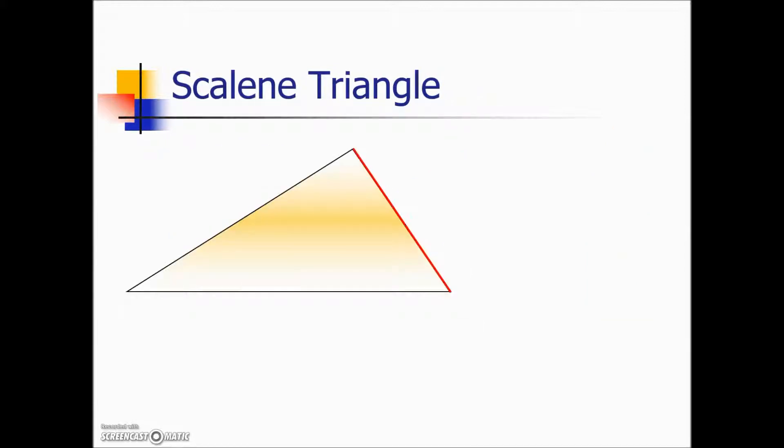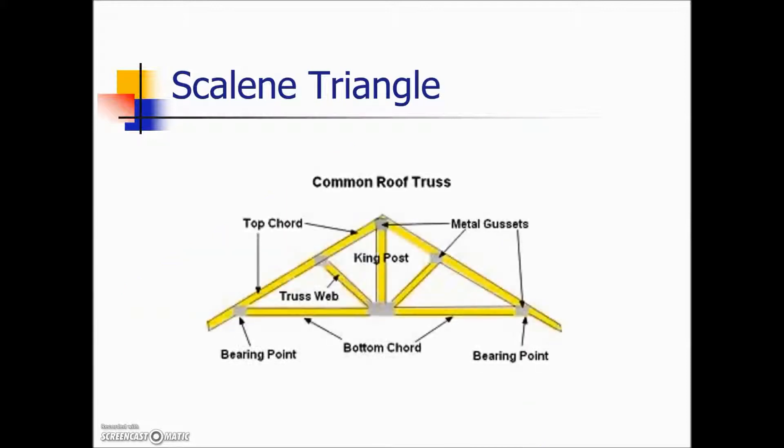The first one we'll take a look at is a scalene triangle. As you can see, each side is a different length and because of that, each interior angle is a different measurement. We see scalene triangles in many real-world applications. Here we have a truss showing two different scalene triangles.